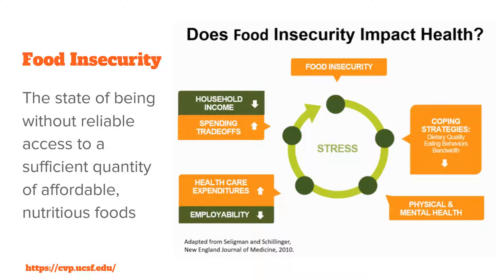Food insecurity is defined as the state of being without reliable access to a sufficient quantity of affordable and nutritious foods. Following the flowchart: food insecurity leads to poor eating behaviors and overall diet, which leads to mental and physical health issues, increased healthcare expenditures, and decreased employability, which leads to decreased total household income and increased trade-offs in spending. It's a pretty vicious cycle.